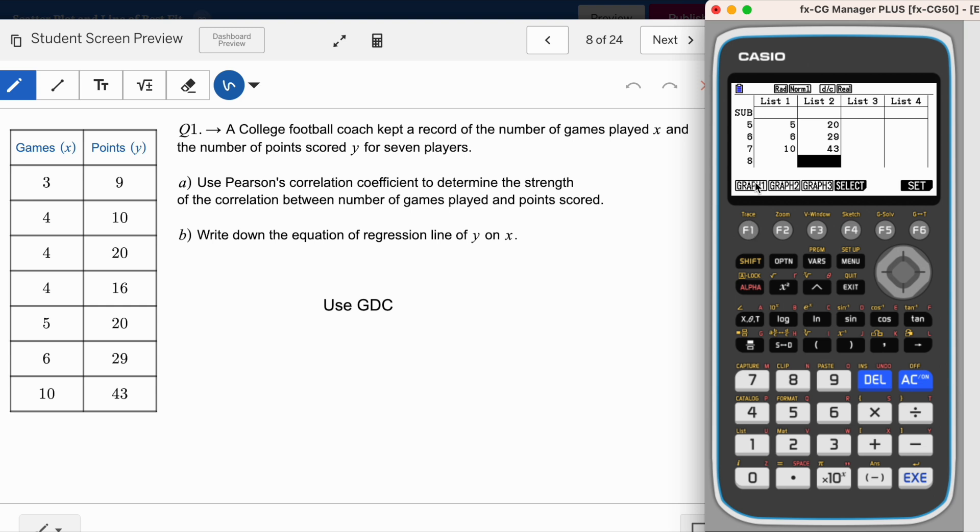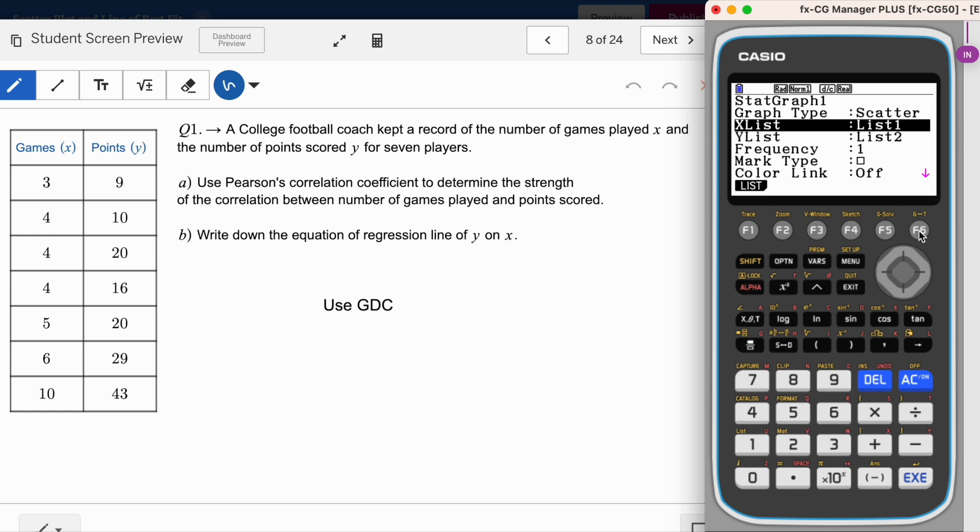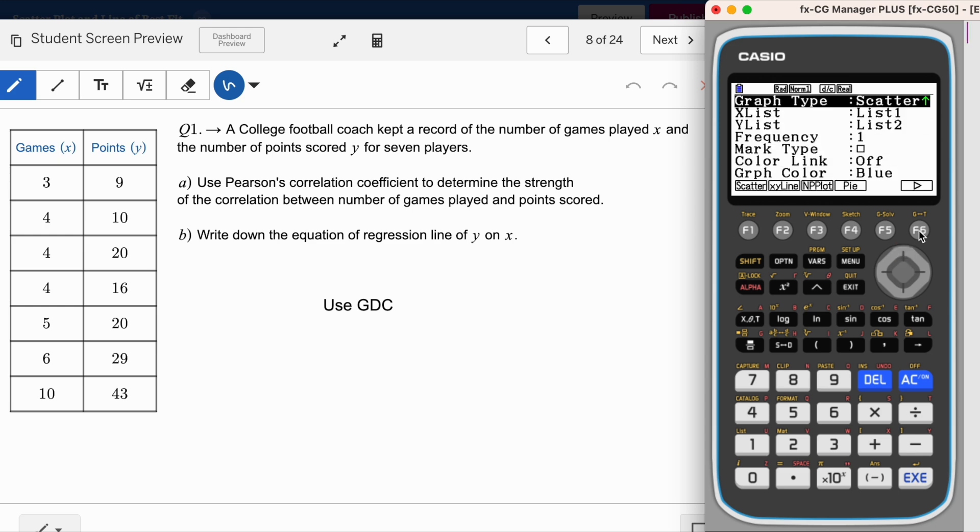Before clicking on graph one, graph two options, go to settings. We have to make sure the x values is actually defined in list number one. I know we entered correctly, but we need to make sure the calculator is reading x values from list one. Go to this button called F6, and here you will see we need scatter plot. X list is actually list number one and y list is list number two. Frequency, definitely we are not entering repeated numbers, so frequency must be one. These are common settings which you have to make sure are correct, especially this one list one, list two.